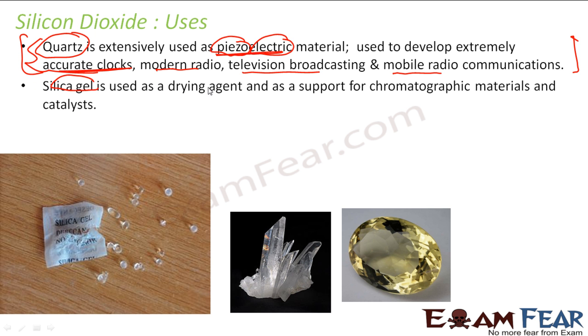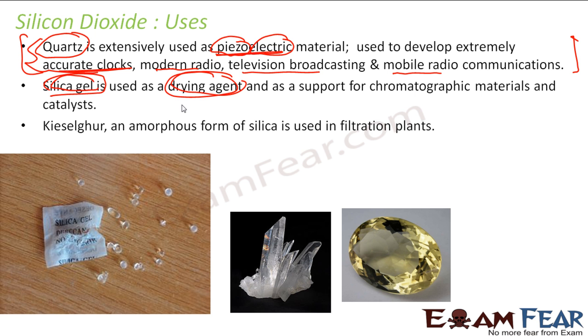Silica gel is used as a drying agent. You must have seen silica gel in your life. When you buy a water bottle or something, it will have silica gel just to make sure that it doesn't absorb water from the atmosphere. Silica gel is used as a dehydrating agent - it absorbs all the water. This is an amorphous form of silica and is used in filtration plants also.